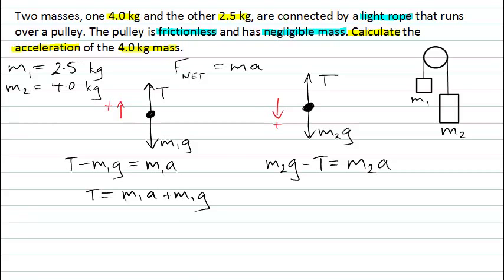Now I can substitute that expression for T over into this equation here for mass 2. I can now write that m2g, and instead of writing minus T, I'll write minus m1a plus m1g. That must equal m2a.